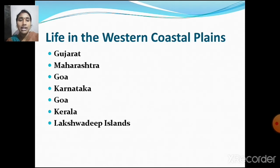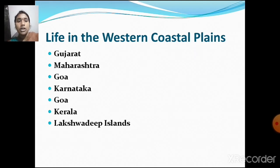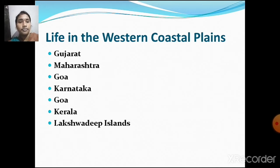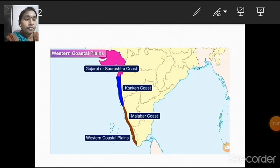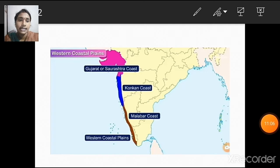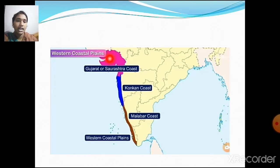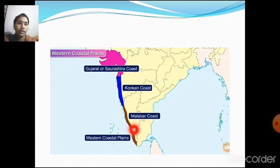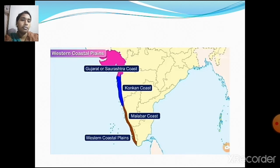Now let us move on to the life in the western coastal plains. The main states present in the western coastal plain are Gujarat, Maharashtra, Karnataka, and Kerala. Let's see how is the life of the people who live in the western coastal plains according to these states.